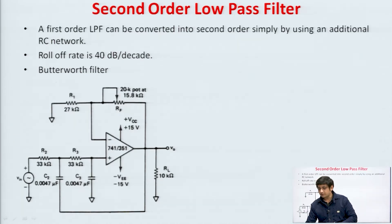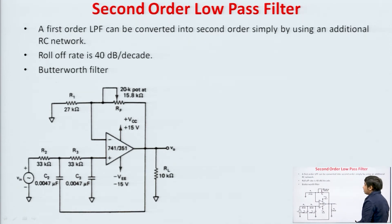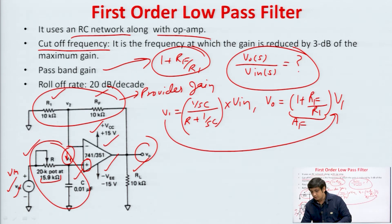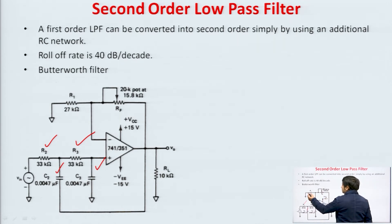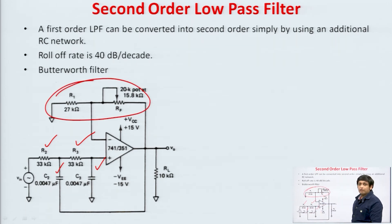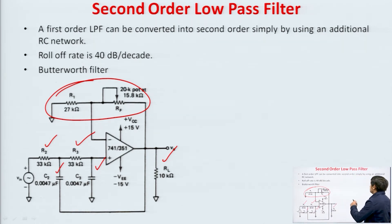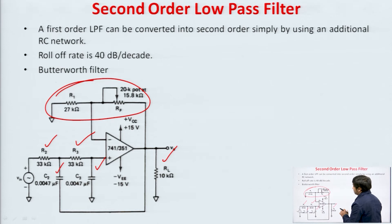This is the problem based on first order low pass filter. Now, next is the second order low pass filter. In the second order we use two RC sections. In the first order we used one R and one C, but in the case of second order low pass filter we use two resistors R2 and R3, and two capacitors C2 and C3. Again the role of R1 and Rf is to provide gain. RL is the load resistance. We can design a second order filter by adding an RC network to the first order filter. For second order filter the roll-off rate is 40 dB per decade.